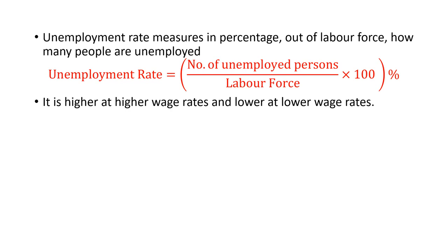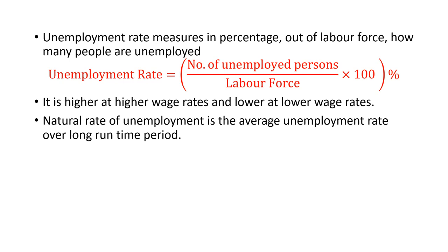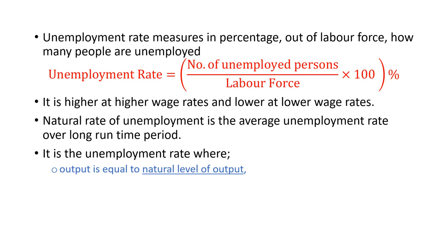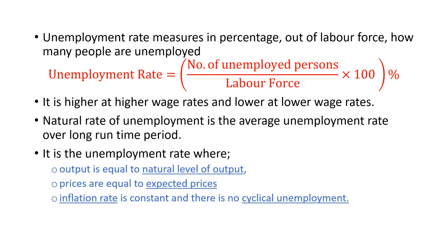The natural rate of unemployment is the average unemployment rate over a long period of time. In more technical words, it is the unemployment rate where output is equal to the natural level of output, prices are equal to expected prices, the inflation rate is constant, and there is no cyclical unemployment. However, to understand it fully, we need to understand what is the natural level of output, what are expected prices, what is inflation rate, and what is cyclical unemployment. We shall cover these concepts later on.